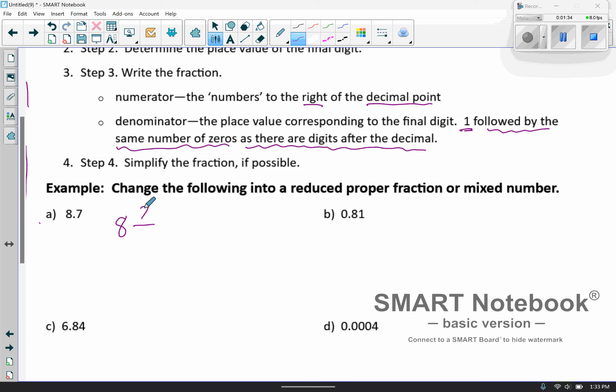And then you're going to have a one followed by the same number of zeros as there are digits after the decimal spot. Well, there's only one, so you're just going to have a one, zero, so ten. So this is eight and seven tenths right here. Eight and seven tenths. And that's our tenths place value right there.